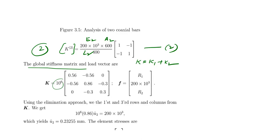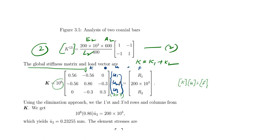Finally we obtain a 3×3 global stiffness matrix, since it is a three-noded element, with 10⁶ as a common factor in both element matrices. The finite element equation is K·u = F, where K is the global stiffness matrix, u is the displacement vector [u1, u2, u3] at each node, and F is the force vector.